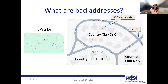Coming from a public safety background including work for a public safety answering point, one of my favorite examples is a street called High View Drive. If somebody calls 911 saying 'I'm on High View Drive,' the call taker will intuitively start typing H-I-G-H V-I-E-W. But actually, this street is spelled H-Y dash V-U. Additionally, there's a hyphen in there, which can be problematic in a computer-aided dispatch system. We want to think about how an address is going to be utilized across the board.